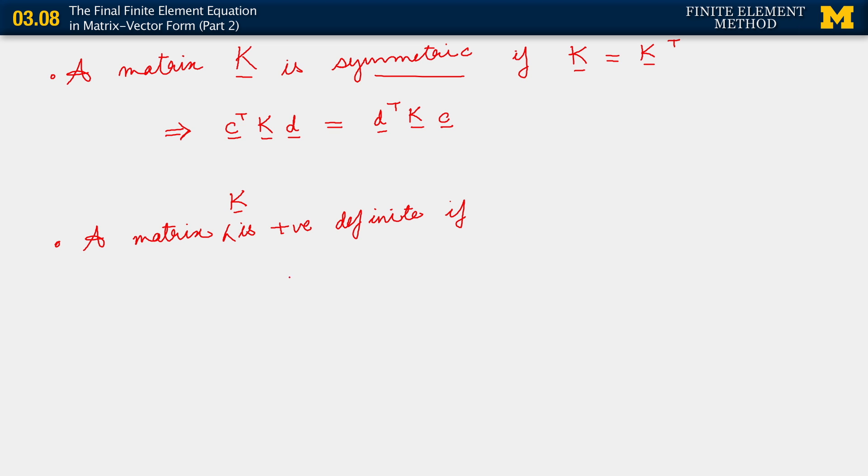Let's do the following. First of all, we need to pay attention to the dimensions of K here. Let's suppose K is an N cross N matrix. In the problem we were looking at, we got an NEL cross NEL matrix. If K is an N cross N matrix, then it is positive definite.